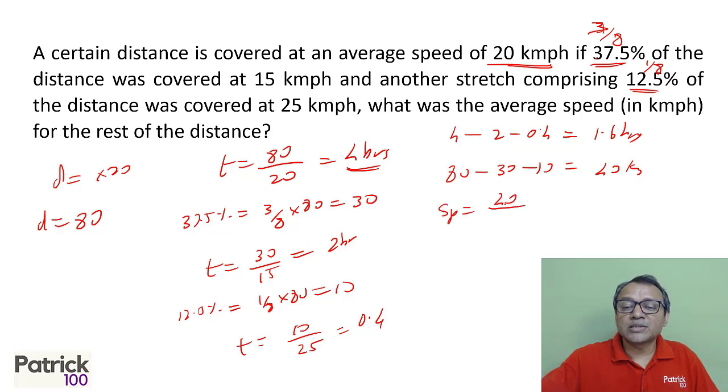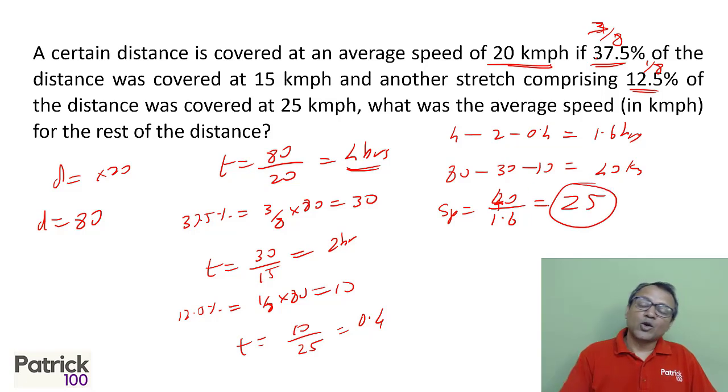Now, the speed will be 40 kilometers at 1.6 hours. We will get the answer 25. 25 kilometers per hour. 4 or 16, so 1 upon 4 is 25, you can make it out. So answer will be 25.